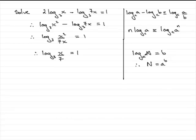So using that here, N is the x over 7, the a is the 3, and the b is the 1. So therefore, if we remove the log, we've got x over 7 equals the base, which is 3 to the power 1.